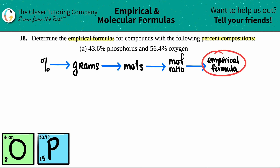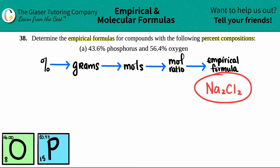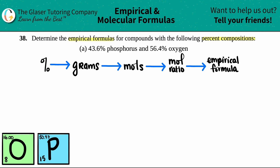First things first — you should know what an empirical formula is. It's a formula that is the most simplified; it has the most simplified subscripts. For example, if I had a formula of Na₂Cl₂, this would not be an empirical formula — it would be a molecular formula. I can take these two subscripts and divide both of them by two to get NaCl. We want a formula that is the most simplified.